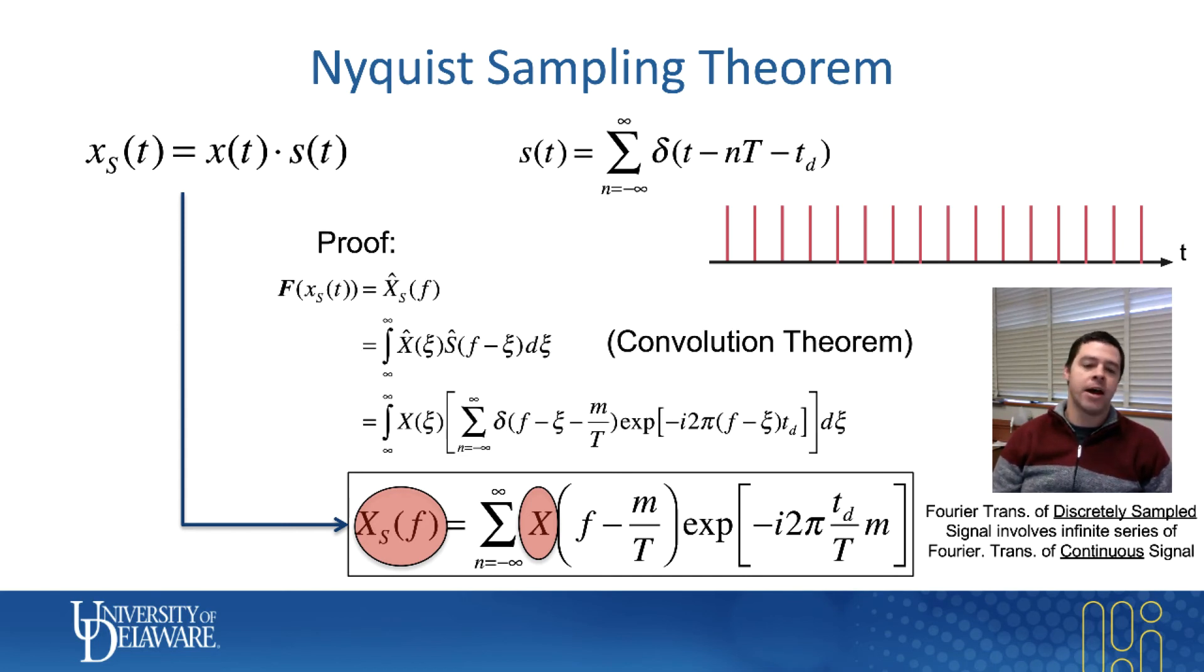And I'm not going to go through the proof all that carefully here. You can look this up. This is called the Nyquist sampling theorem. But basically, the long and short of it is that if you take the Fourier transform of your sampled signal, by definition, that is because these are multiplied, you can use the convolution theorem.